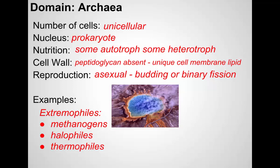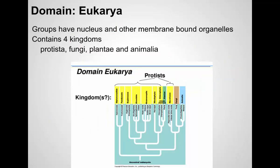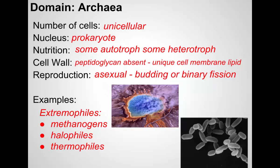Some examples are the extremophiles, like methanogens, which can use methane as a source of energy; halophiles, which live in extreme salt conditions; and thermophiles, which can live at extremes of temperature. Some of these archaea can live in geysers and deep vents in very inhospitable areas. So we have bacteria, we have archaea, and then we have the domain we call eukaryotes.